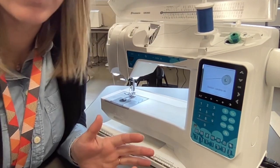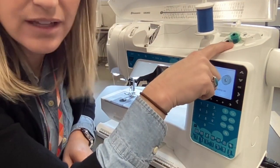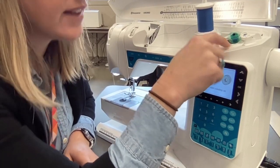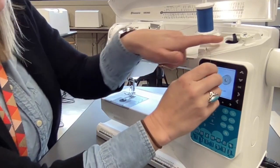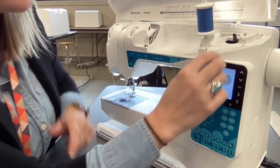Okay, as it's winding, what I'm looking for is that the thread is going evenly on the bobbin. It's not coming off and going underneath the bobbin spindle. Sometimes it's possible for the thread to get caught on the bobbin spindle instead.